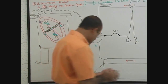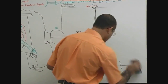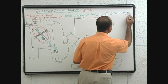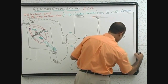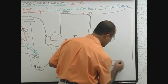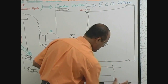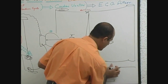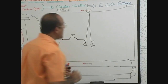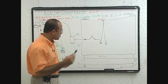Now one more diagram will be made to make the concept clearer. The paper roll is extended, and the ECG machine allows a larger paper to see the other events as well.